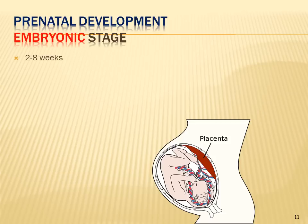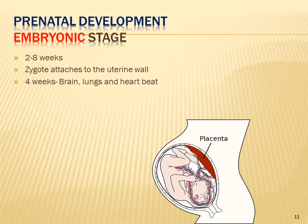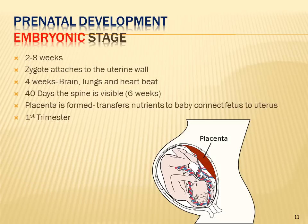The embryonic stage lasts from about two to eight weeks. The zygote attaches to the uterine wall and becomes the embryo. By four weeks, the brain, lungs, and heartbeat begin to develop. At about six weeks, a visible spine appears. The placenta also forms, attaching to the uterus and providing the embryo with nutrients.